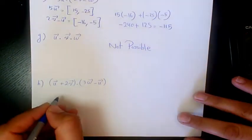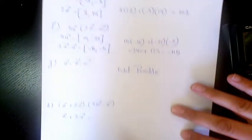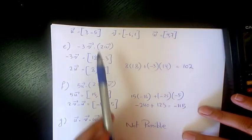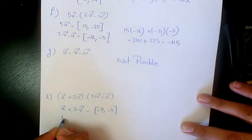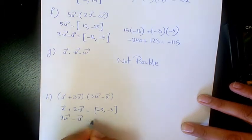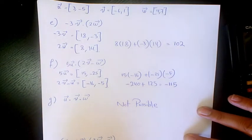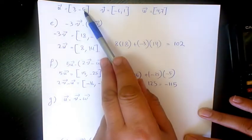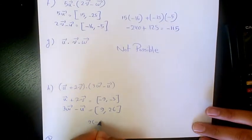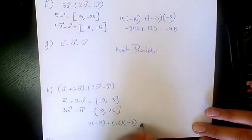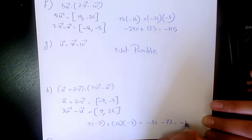Next example: (u plus 2v) dot (3w minus u). u plus 2v = (3-12, -5+2) = (-9, -3). 3w minus u = (12-3, 21-(-5)) = (9, 26). Dot product: -9 times 9 plus 26 times -3 = -81 minus 78 = -159.